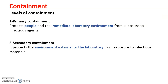There are two levels of containment. In primary containment, the main focus is to protect the person who is working with the infectious agent and the immediate laboratory environment from exposure. In secondary containment, the focus is more expanded — it also includes protecting the external environment outside the laboratory. So in secondary containment, we protect both the worker and the immediate lab environment, as well as the external environment.